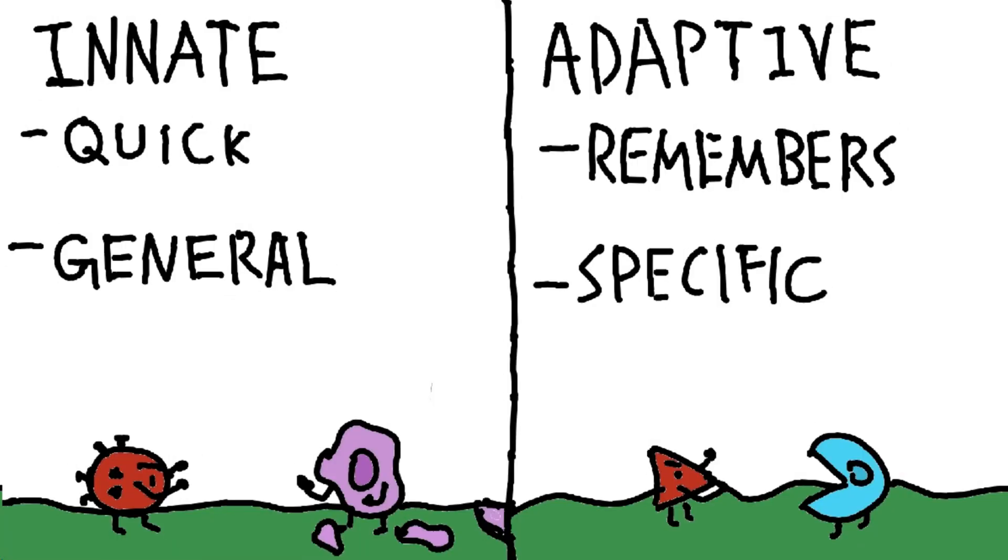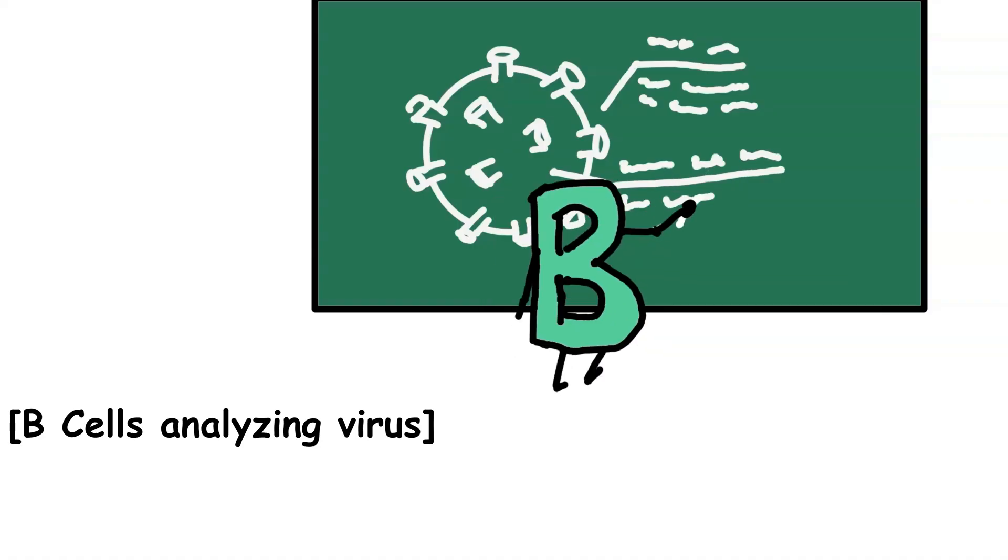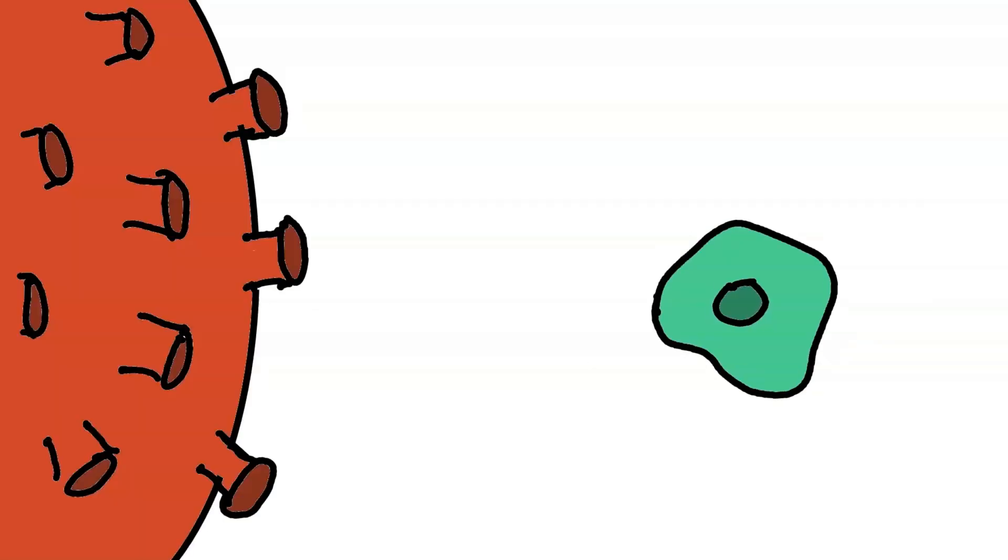Let's move on to the next line of defense, your adaptive immune system. Unlike the innate response, this one's highly specialized. It takes a little longer, but it's much more precise. Specialized cells called B cells begin analyzing the virus, looking for ways to stop it. Once they've locked onto the invader, they start producing antibodies, tiny Y-shaped proteins that are custom-built to target the virus.